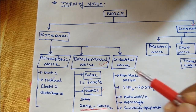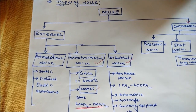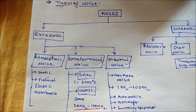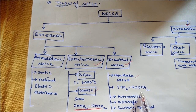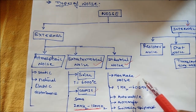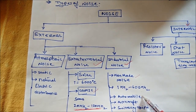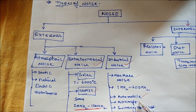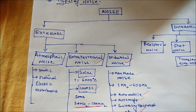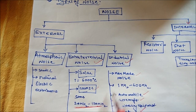Now moving on to industrial noise. Industrial noise is a kind of noise generated within industry — these are basically man-made noises. It occurs in the range of 1 MHz to 600 MHz. It is caused by sources such as automobiles, aircraft moving through the air, switching equipment, or heavy machinery. This type of noise is known as industrial noise.